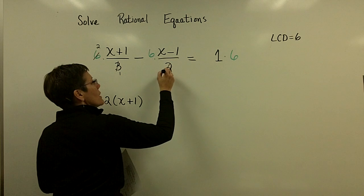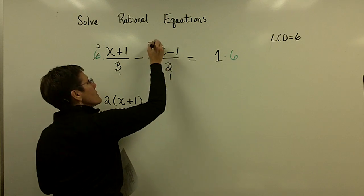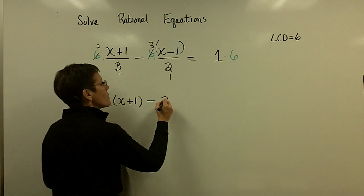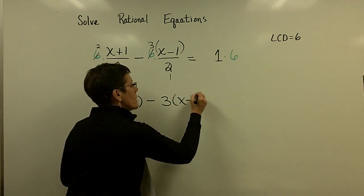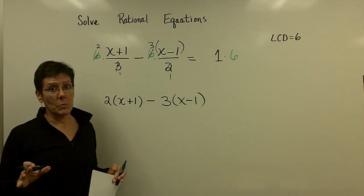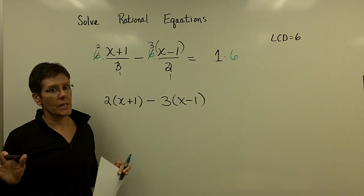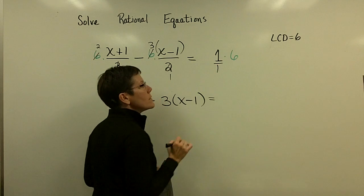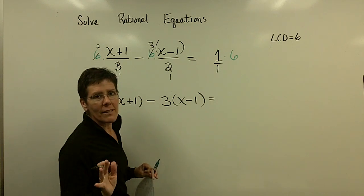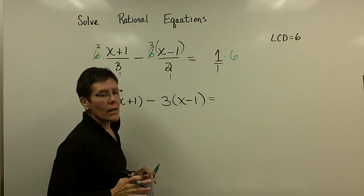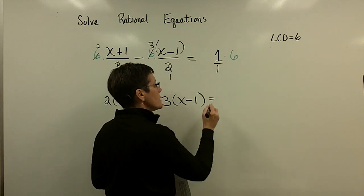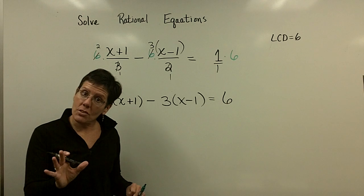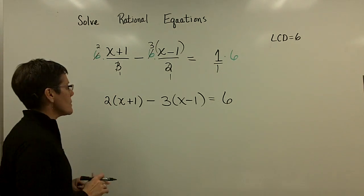So this had a 2 in the denominator. It's missing a 3. But 2 goes into here once and into there 3 times. And I've got to multiply this minus 3 times the x minus 1. Now, denominators are all gone. This becomes a very clean problem because you don't have fractions anymore. This had a 1 in the denominator, so it was missing everything. And so, it had to be multiplied by the whole denominator.